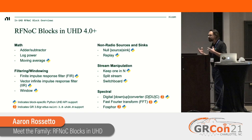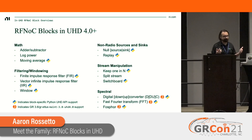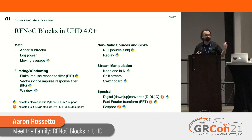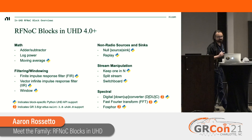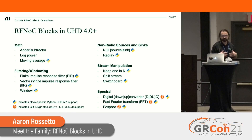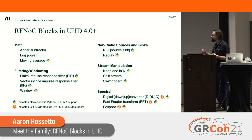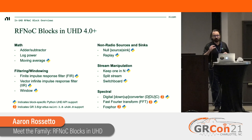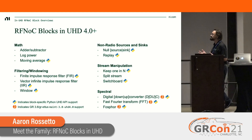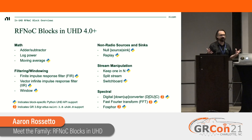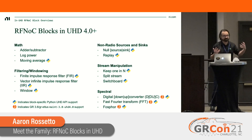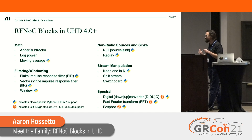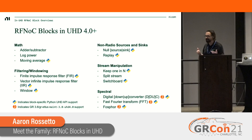I break the DSP blocks down into five areas: mathematical operations, filtering and windowing functions, alternate sources and sinks (ways to get data into and out of a graph that don't end in an antenna), stream manipulation, and spectral computation. On this slide, the Python logo indicates blocks with support in our UHD Python API — not all have it, but that doesn't mean you can't use them from Python. Some blocks like the split-stream block have no meaningful API, but you can get a reference via the common base class.